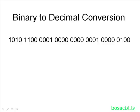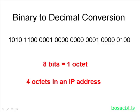So let's jump in. We have an IP address here expressed in binary, all 32 bits. And we know that 8 bits equals an octet. So if we were to break this IP into its four octets, we can just draw lines every 8 bits. And there we have it — octets 1, 2, 3, and 4.